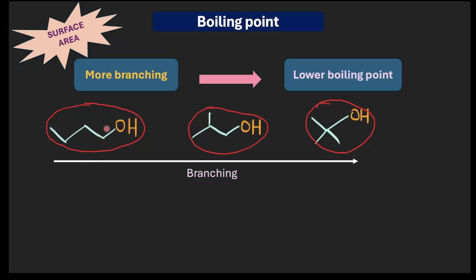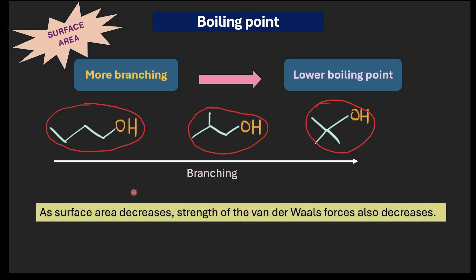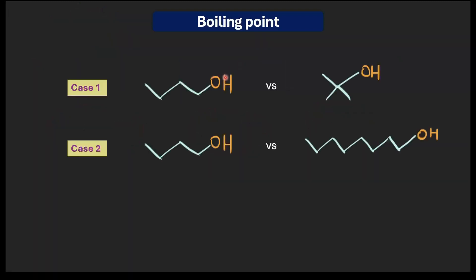When branching increases, the effective molecular contact area decreases, which has an adverse effect on the strength of attractive forces. As surface area decreases, the strength of van der Waals forces also decreases, and that lowers the boiling point. So the two important factors affecting boiling point of alcohols are molecular mass and branching.